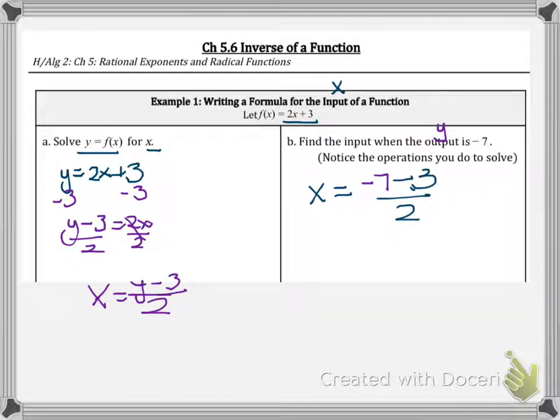So to notice the operations on here, in order to solve for this, the first thing we do is we subtract 3. And notice here, that's what we did there. So we subtract 3 first, we have negative 10 divided by 2. Next, in order to continue solving this problem, we would divide by 2. And notice that's what we did last when we're doing our inverse function. So this is x equals negative 5.